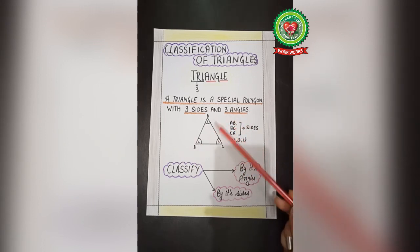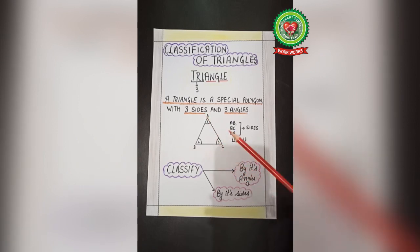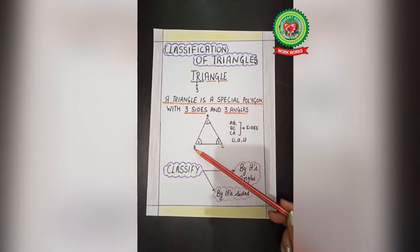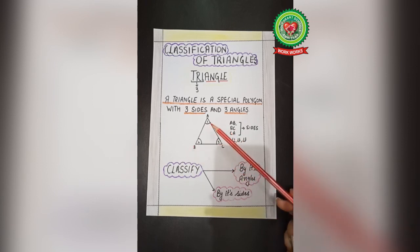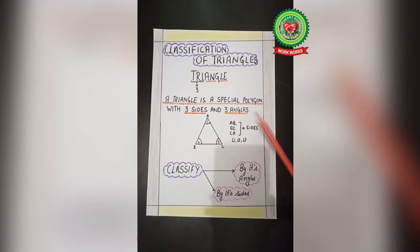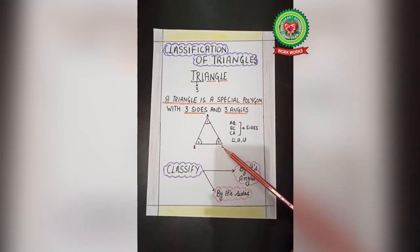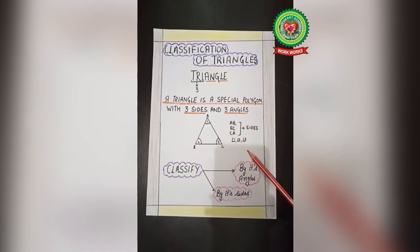Here you can see the shape of a triangle in which AB, BC, and CA are the three sides. These points make three angles at the corner points — angle 1, angle 2, angle 3. We can also give them naming as angle A, angle B, angle C. So this is a triangle with three sides and three angles.